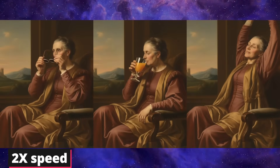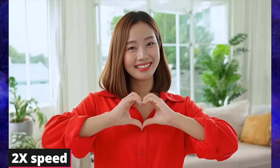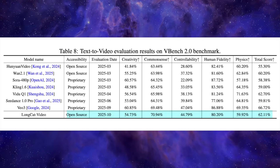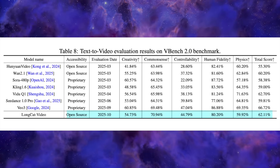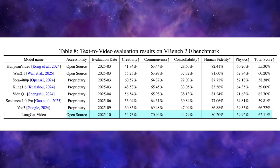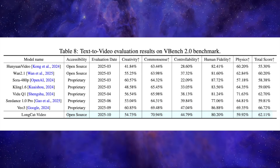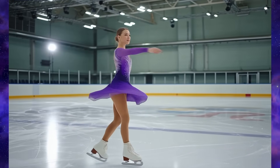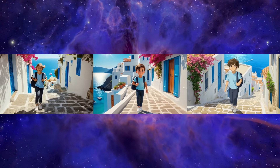We're talking text-to-video, image-to-video, and even extending existing videos with continuation all in the same workflow. On the VBench 2.0 benchmark, it's pulling a 62.11% overall score, crushing other open source models like WAN 2.1 and even some closed source players like Vadoo Q1. It's only trailing behind Google's VO3. It spits out 720p videos at a smooth 30 frames per second in just a few minutes, all thanks to some seriously clever efficiency tricks under the hood.